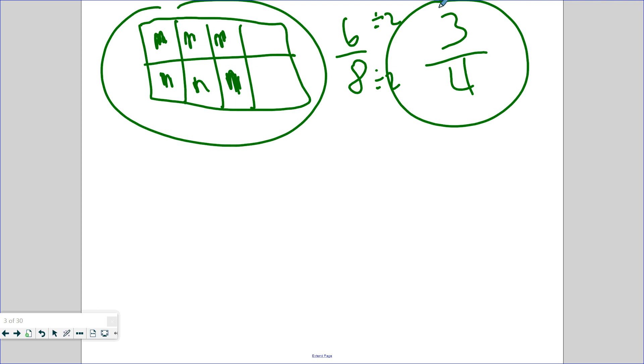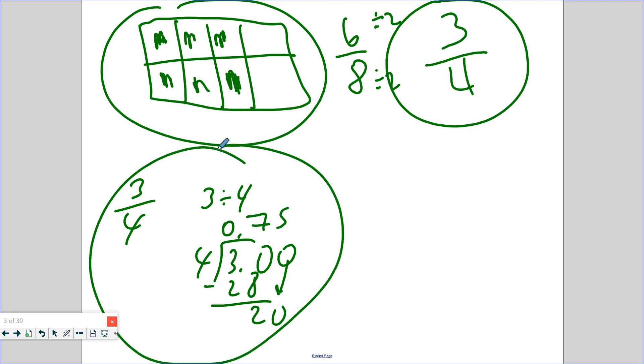Then maybe someone will say oh, three divided by four, because the numerator always goes inside the division bar. It goes in seven times. Thirty minus twenty-eight is two, and it's zero point seventy-five hundredths.